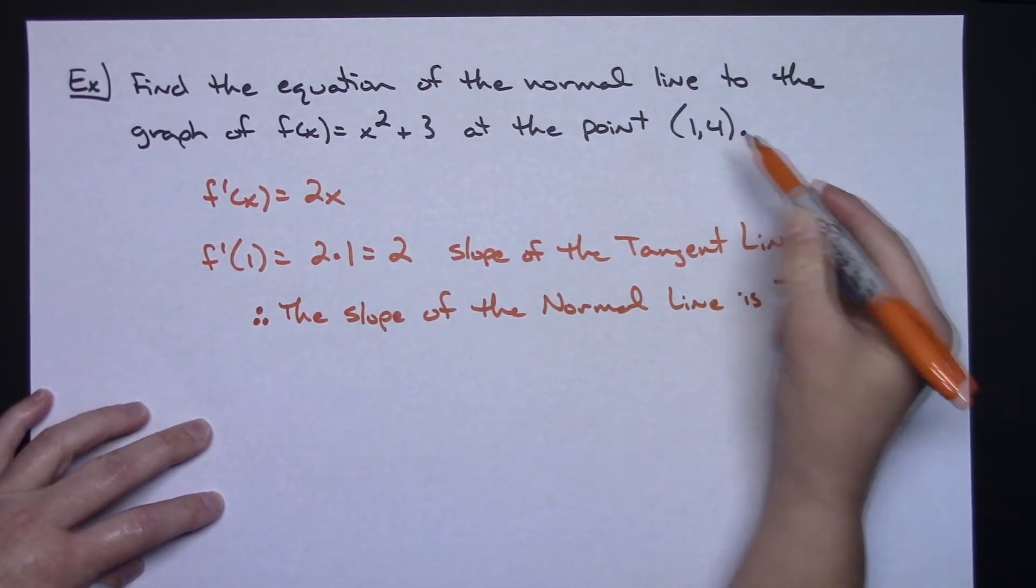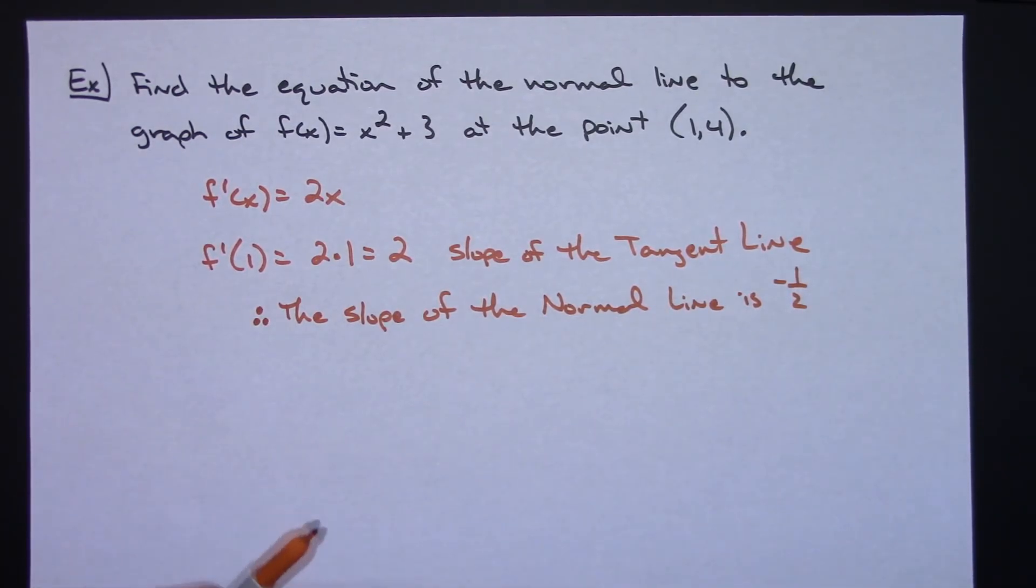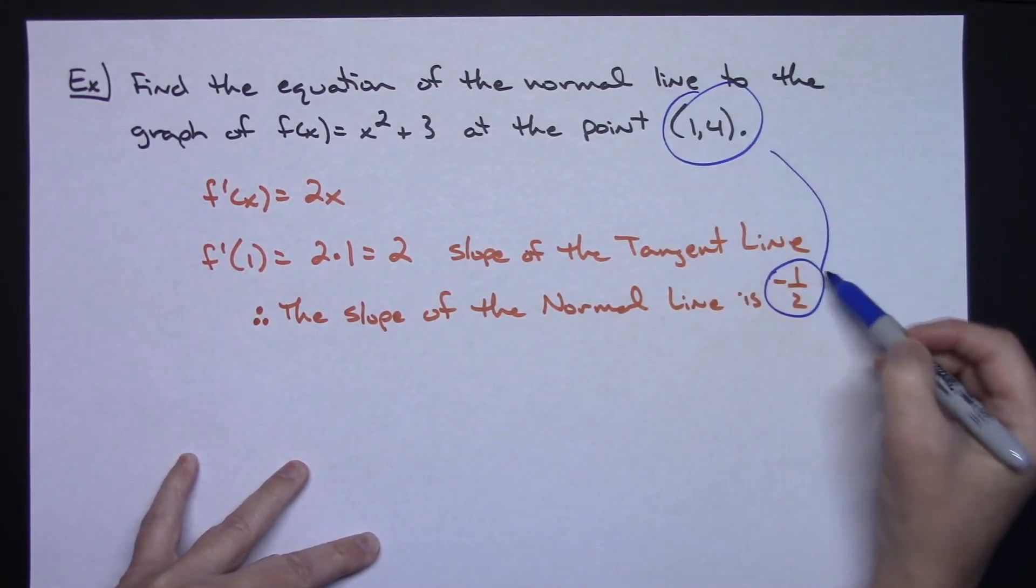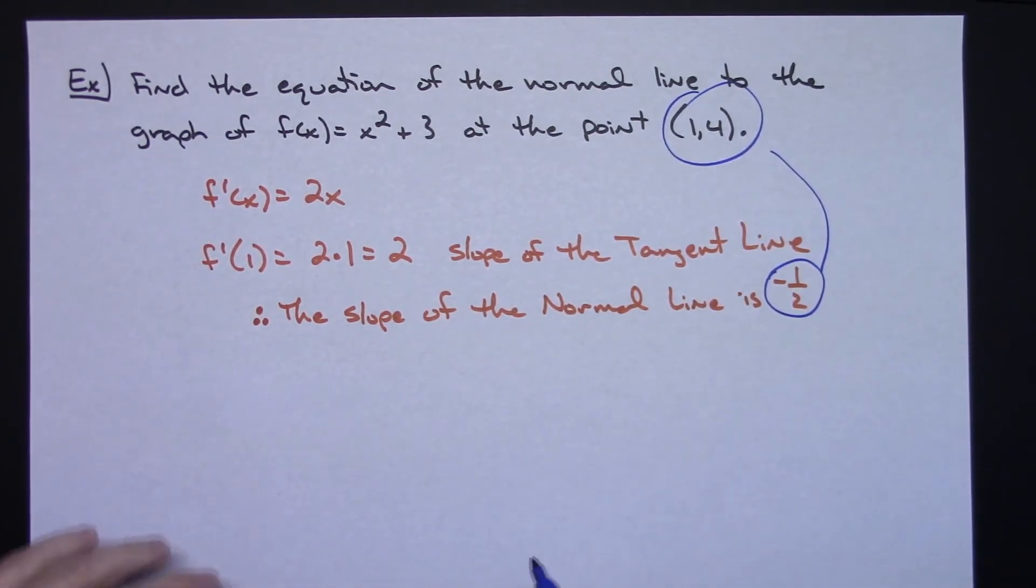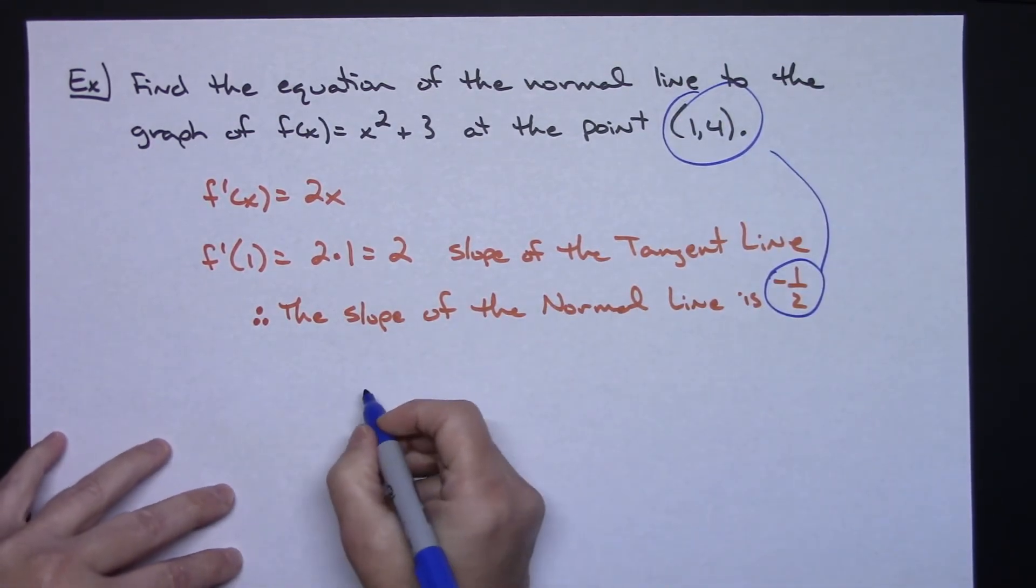And as long as I know the slope and a point on that line, then I can write the equation. So that's what I'm going to do. I'm going to choose the slope of this normal line and the point. I'm going to use those two things to write my equation. And since I've got the slope and a point, might as well use point-slope form here.